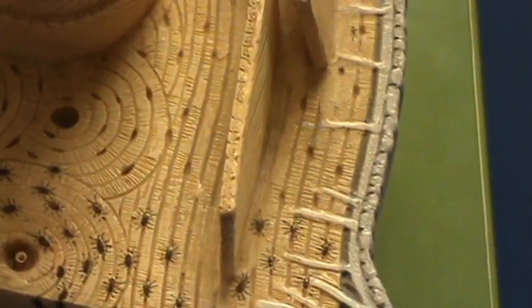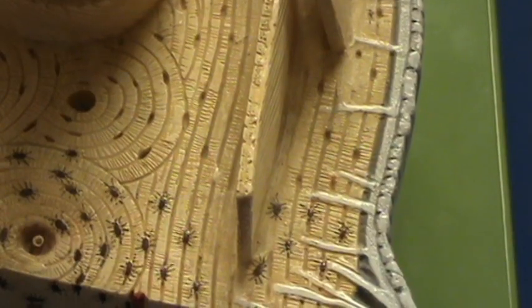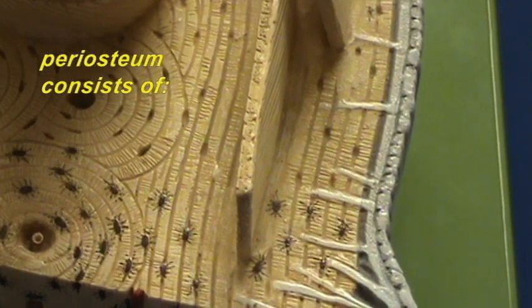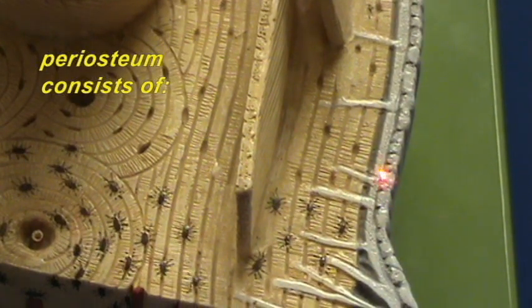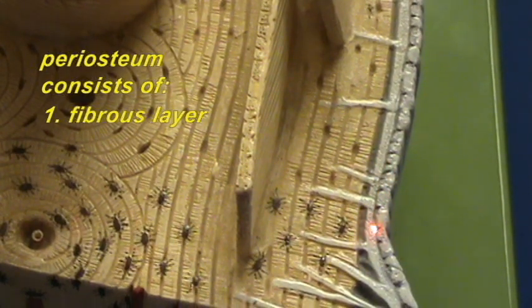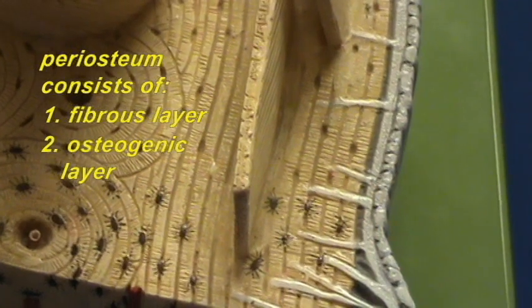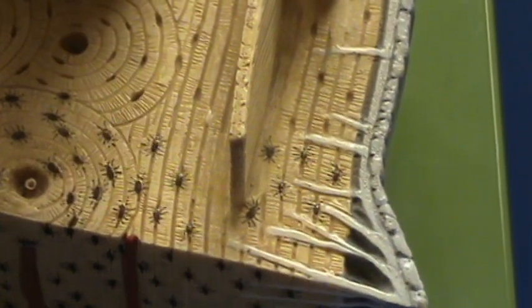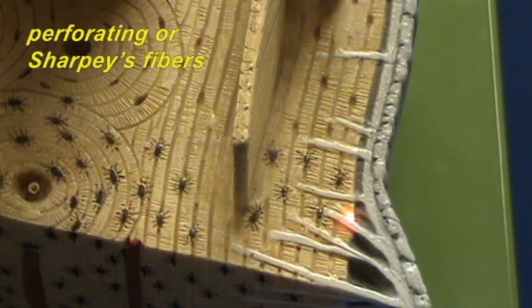And again, you can see that the periosteum consists of two layers. You have this outer fibrous layer and an inner cellular or osteogenic layer. And again, you can see that there is an attempt to show how these perforating or Sharpey's fibers help to anchor the periosteum onto the surface of the bone because it is being pulled away right over here.